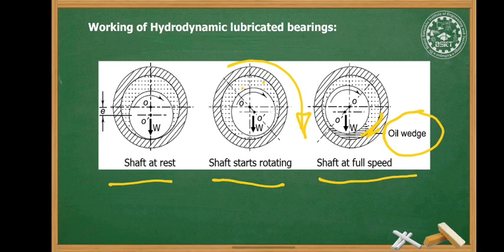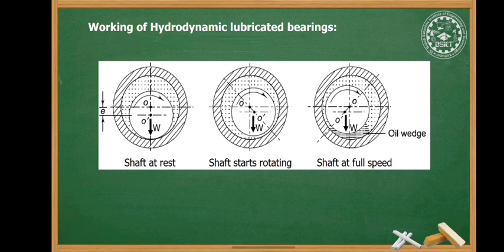Since the pressure is created within the system due to the rotation of the shaft, this type of bearing is known as a self-acting bearing. For this type of bearing, it is not necessary to supply the lubricant under pressure; the only requirement is that there is a sufficient and continuous supply of lubricant. This concludes the working of hydrodynamic lubricated bearings.